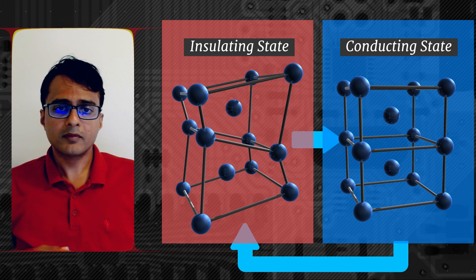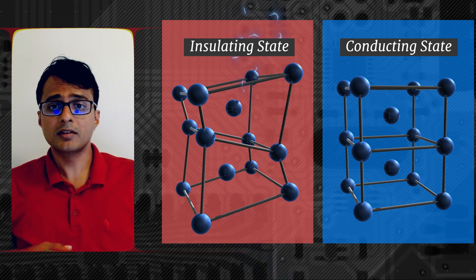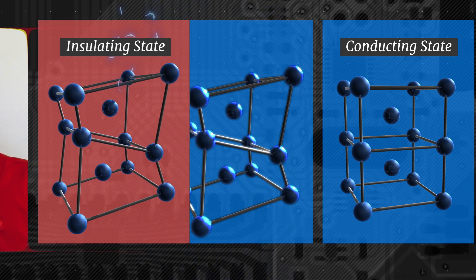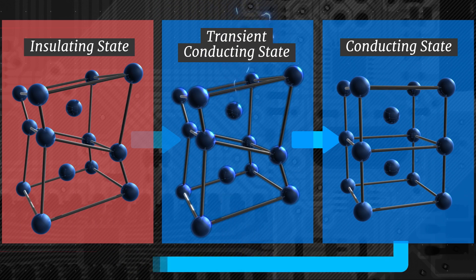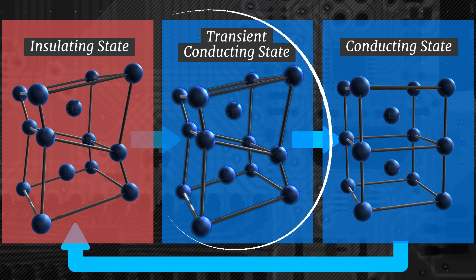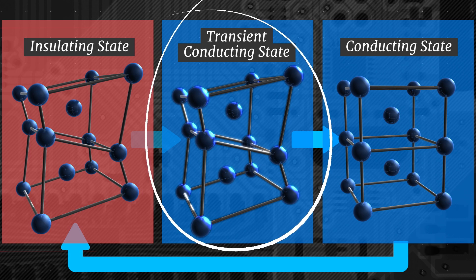We find that when these materials are electrically shocked, they can go from being insulating to conducting, but without any of the atoms actually having to move. So this is a new form of this material that does not exist naturally, and is created inside the switches in our experiments.